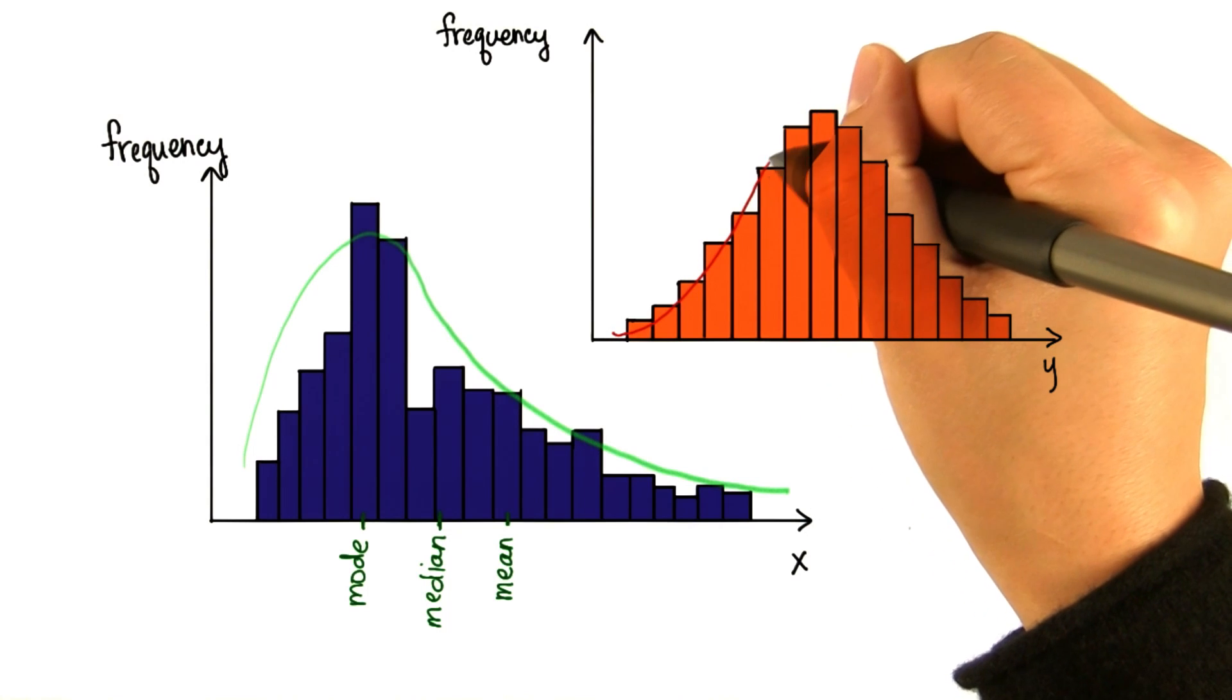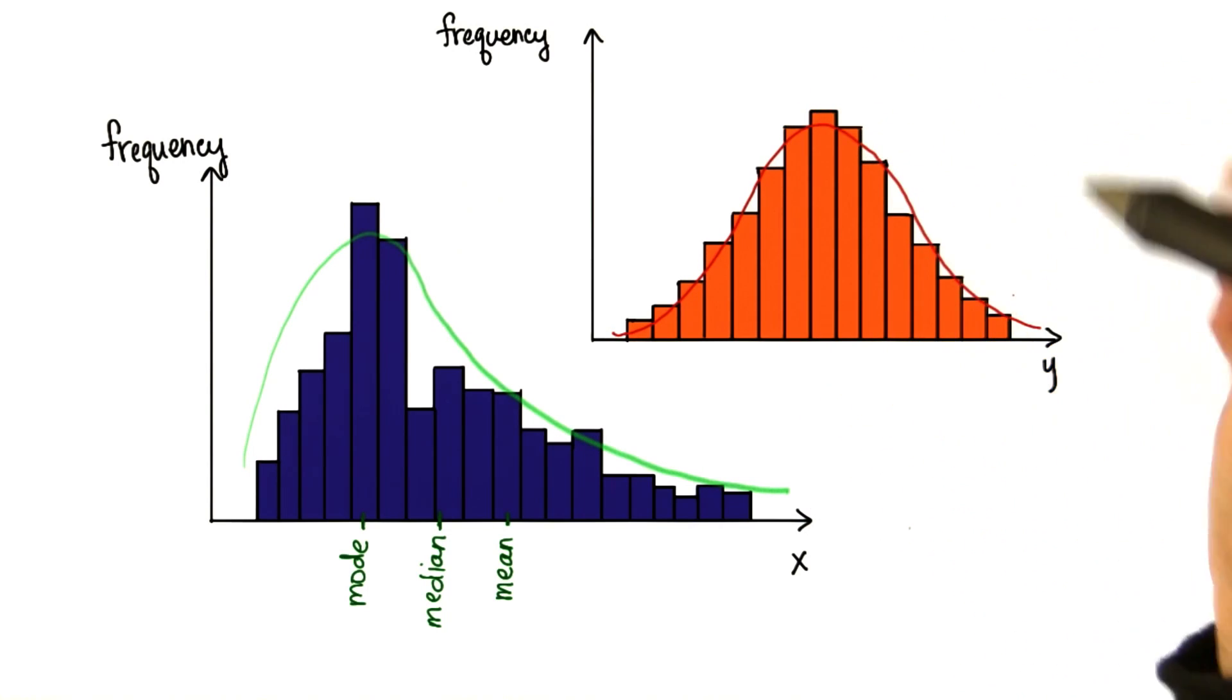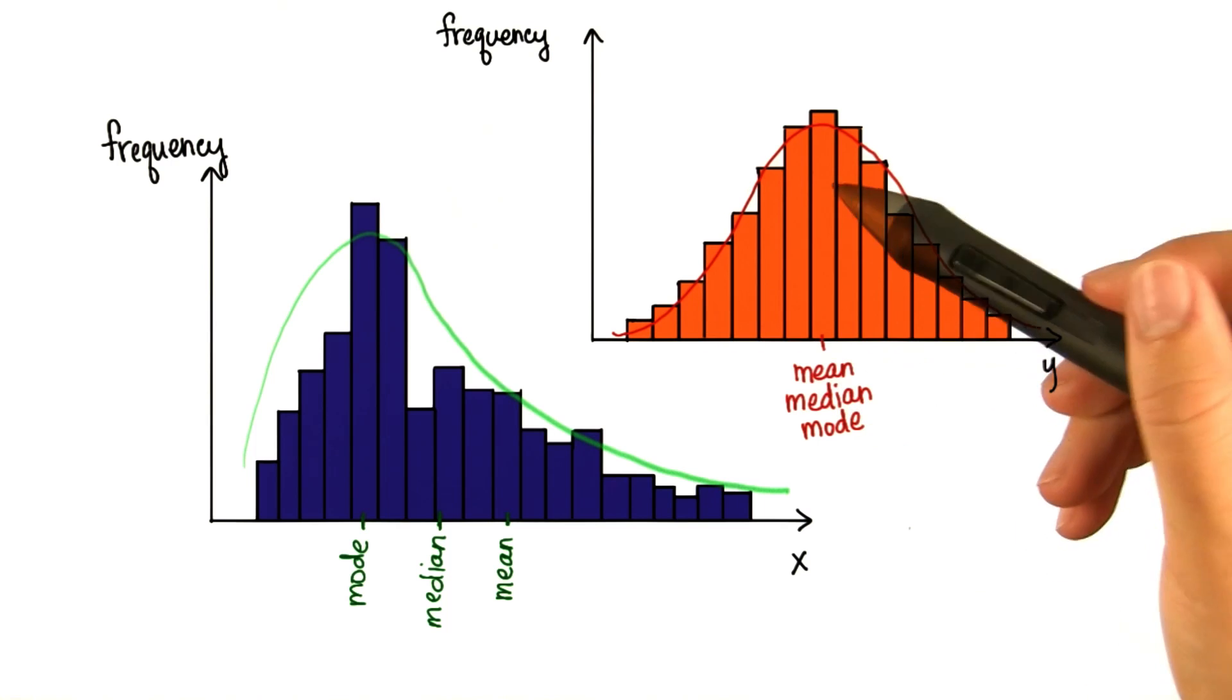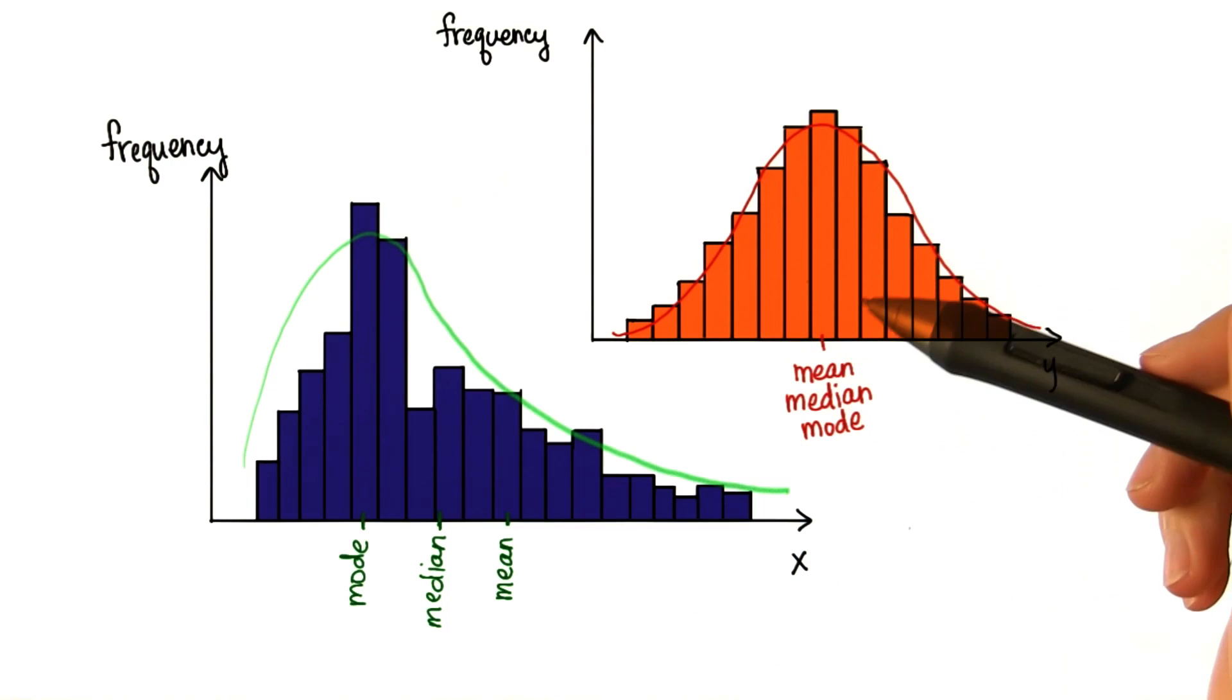In a normal distribution, the mean, median, and mode are approximately equal. What else is important about knowing the shape of a distribution?